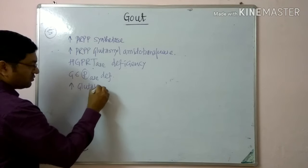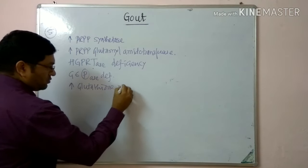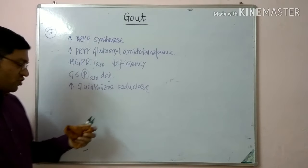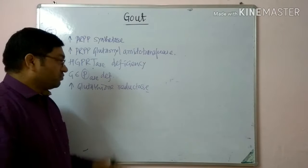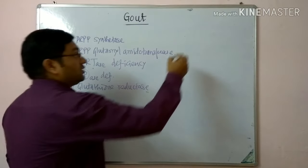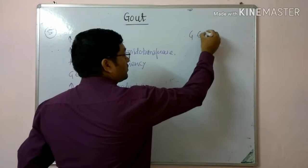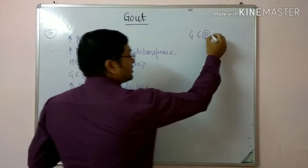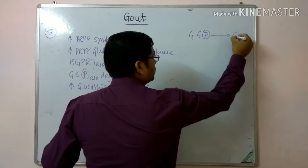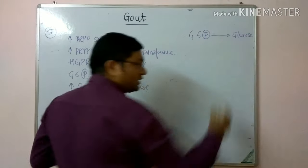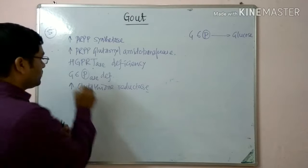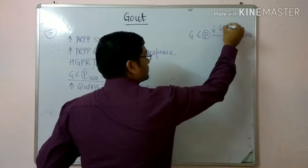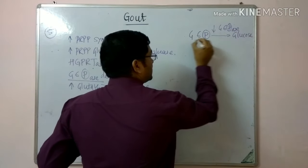The third cause is HGPRT — hypoxanthine-guanine phosphoribosyl transferase deficiency. The fourth is glucose-6-phosphatase deficiency, which occurs in Von Gierke disease. The fifth cause is increased activity of glutathione reductase. These are the five important primary causes of gout.